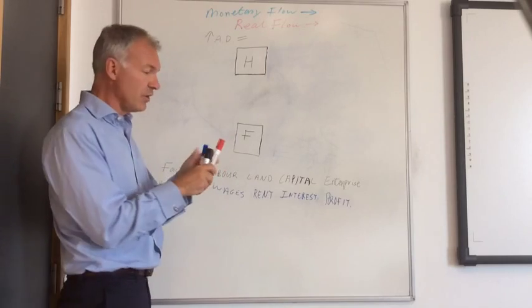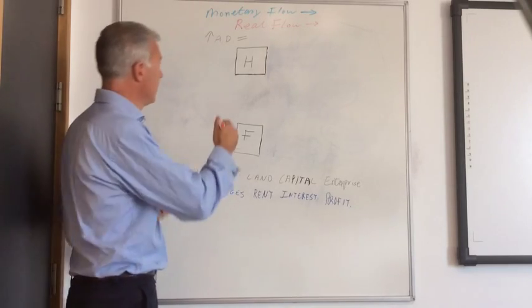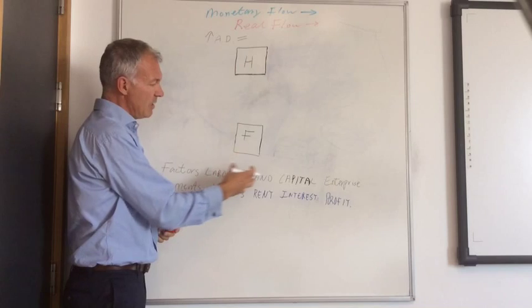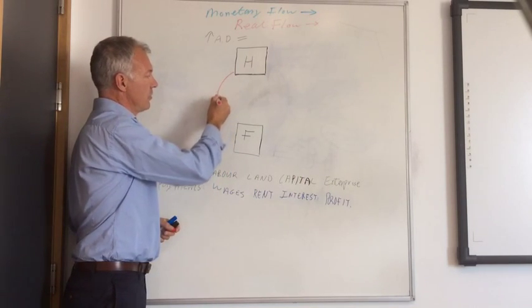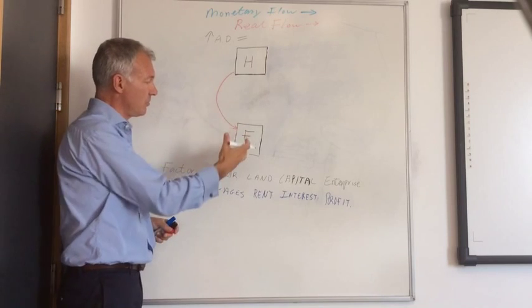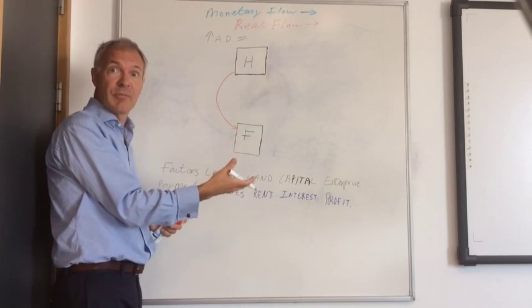So if we do the real flow in red, the real flow of labour, land, capital and enterprise comes from households to firms. Households supply firms with labour, for example.